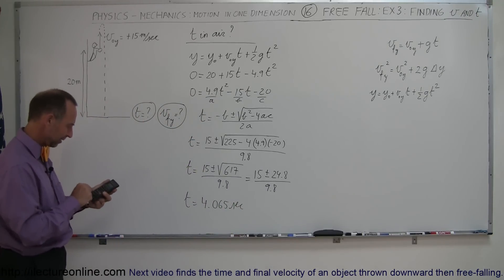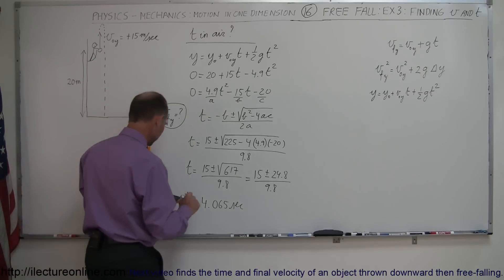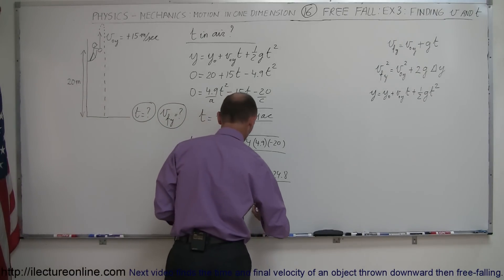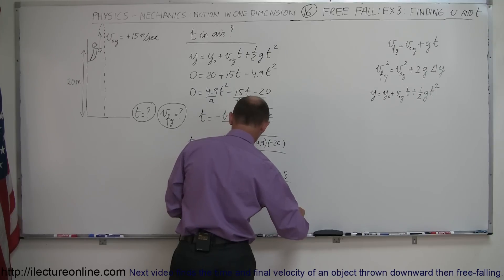And then if we take 617, take the square root of that and make that minus and add that to 15 and divide by 9.8, we get a minus 1.004 or t equals a minus 1.004 seconds.